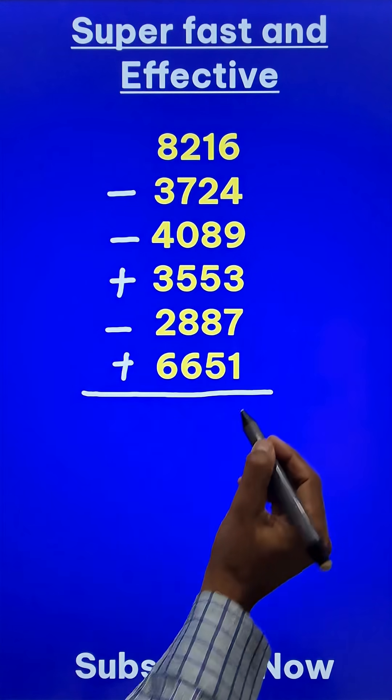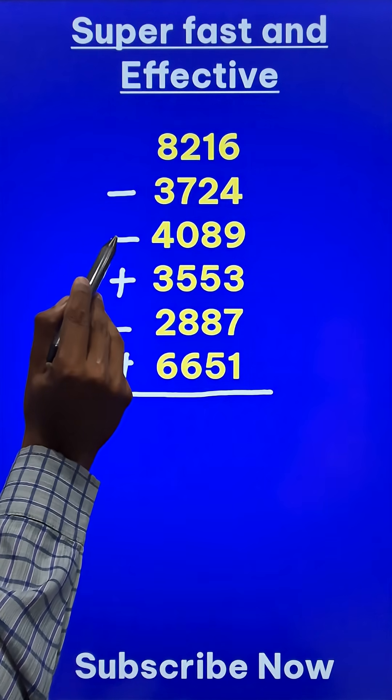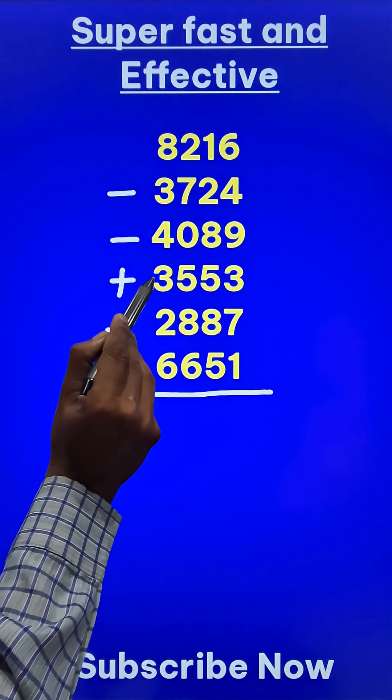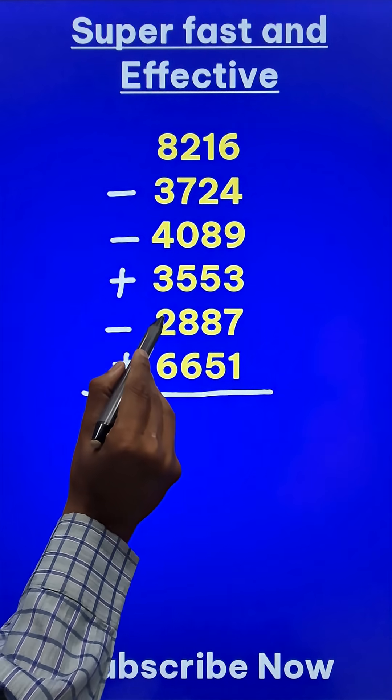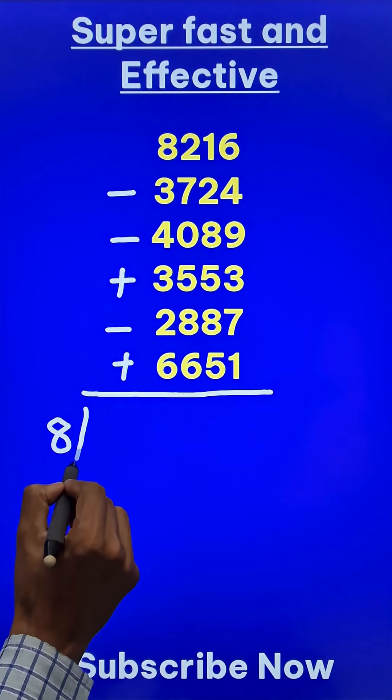Let's try and use this method. So let's take one digit at a time. 8 minus 3 is 5, 5 minus 4 is 1, 1 plus 3 is 4, 4 minus 2 is 2, 2 plus 6 is 8. So I'll write 8 here followed by,